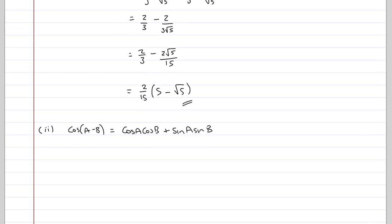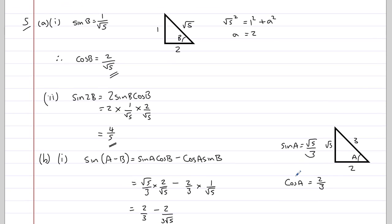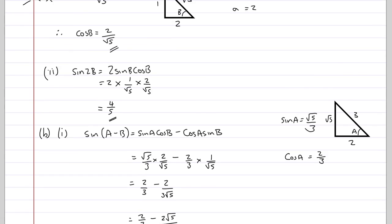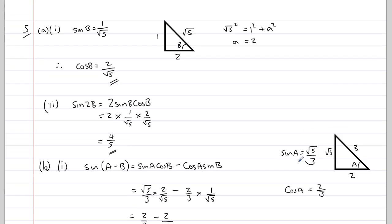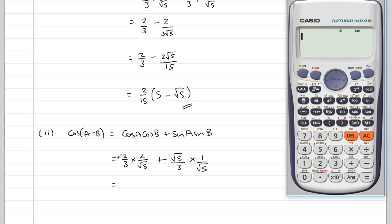So substituting our values, cos A is two thirds, cos B is 2 over root 5. Sine A is root 5 over 3, sine B is 1 over root 5. And for this one, I'm simply going to put it into my calculator and let it do the work for me. So two thirds times 2 over root 5 plus root 5 over 3 times 1 over root 5,